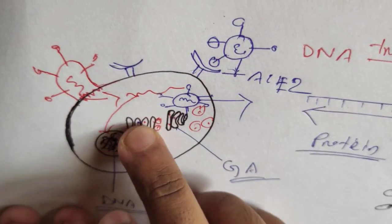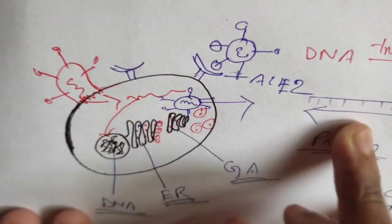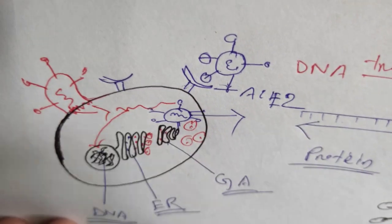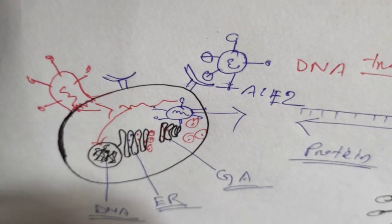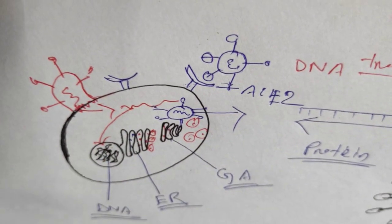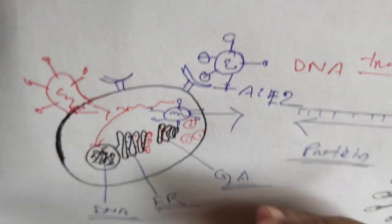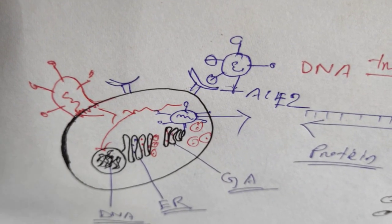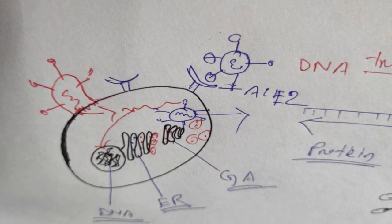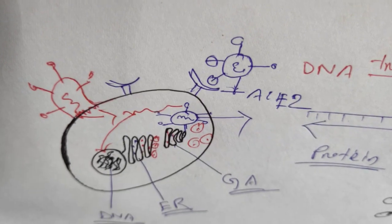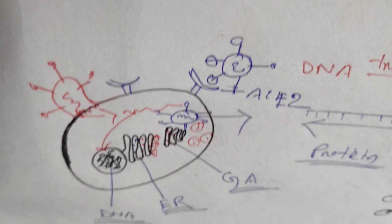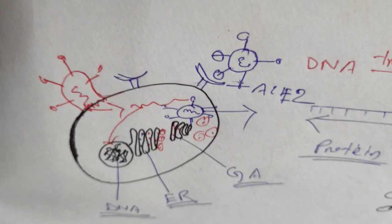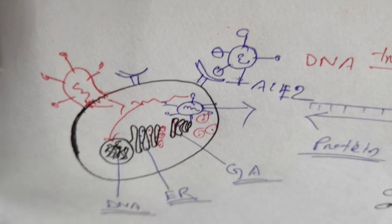That is how the coronavirus affects our cell — it damages the cell, gets out of it, and infects another cell. That is how it starts growing in our body, especially targeting goblet cells present in the respiratory tract, particularly the upper respiratory tract. This is how the coronavirus affects the human cell. Thank you.